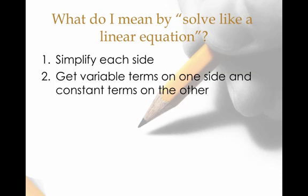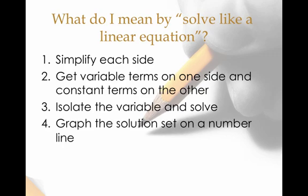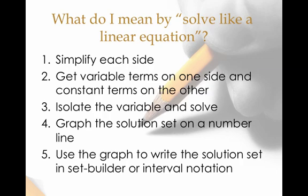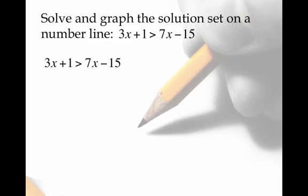We simplify each side. We get the x terms on one side. We get the numbers or constant terms on the other. We isolate the variable and solve. Then we're going to graph the solution set on a number line. So 4 is the only step where we're different than solving the linear equation. Instead of having our one solution, we're now going to graph the solution set on a number line. And then we're going to use that graph to write the solution set in set builder or interval notation. In particular, on the exam, I'm not going to be terribly picky. I will ask you to graph it on a number line. And then I'll just say express it also in set builder or interval notation. Whereas in my math lab and the homework, it's going to be a little bit more specific.